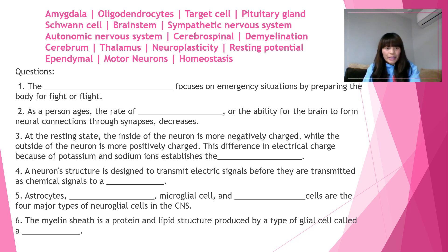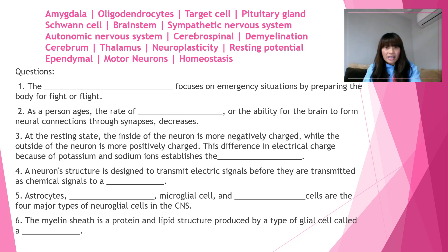Number three: at the resting state, the inside of the neuron is more negatively charged while the outside of the neuron is more positively charged. This difference in electrical charge because of potassium and sodium ions establishes the resting potential. The answer for number three is resting potential.